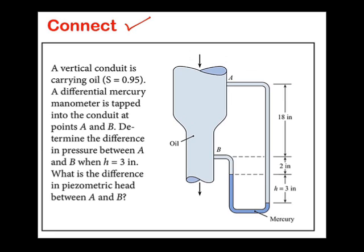Engineers often want to measure pressure in a flowing fluid. Typically, we want the pressure at the centerline of the pipe. To do this, we go to the pipe wall and cut a hole right there. Let me show you how this works.